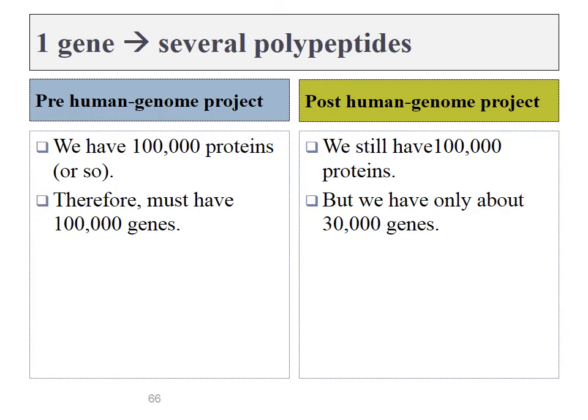Because of alternative splicing, we have about 30,000 genes, but we can make those 30,000 instructions slightly differently into about 100,000 or so different proteins. So those are some of the basics about nucleic acids and DNA and RNA.